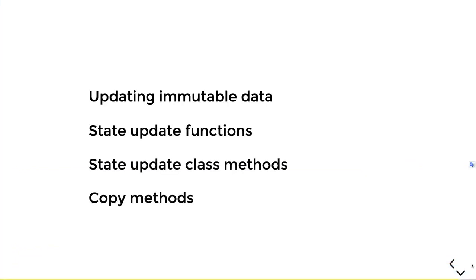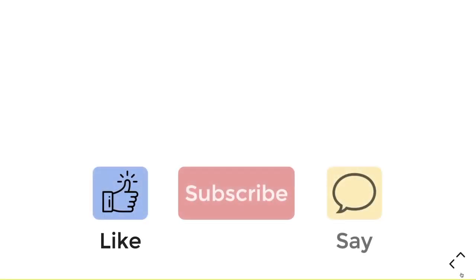In summary, we learned three ways to update immutable data types: first, create a state update function that lives outside the class; second, create a state update class method that lives inside the class; and lastly, the copy method, which returns an object as a copy of your original with selected properties updated. Don't forget to share, subscribe, and like, and comment below what Dart or Flutter concepts you'd like me to cover next. Stay safe and all the best!